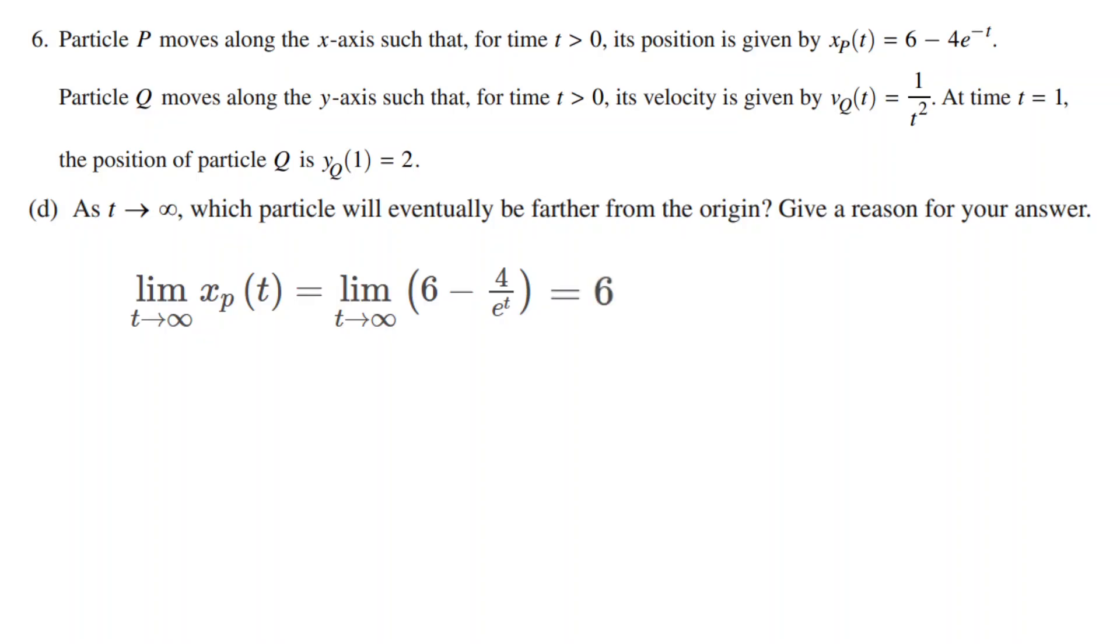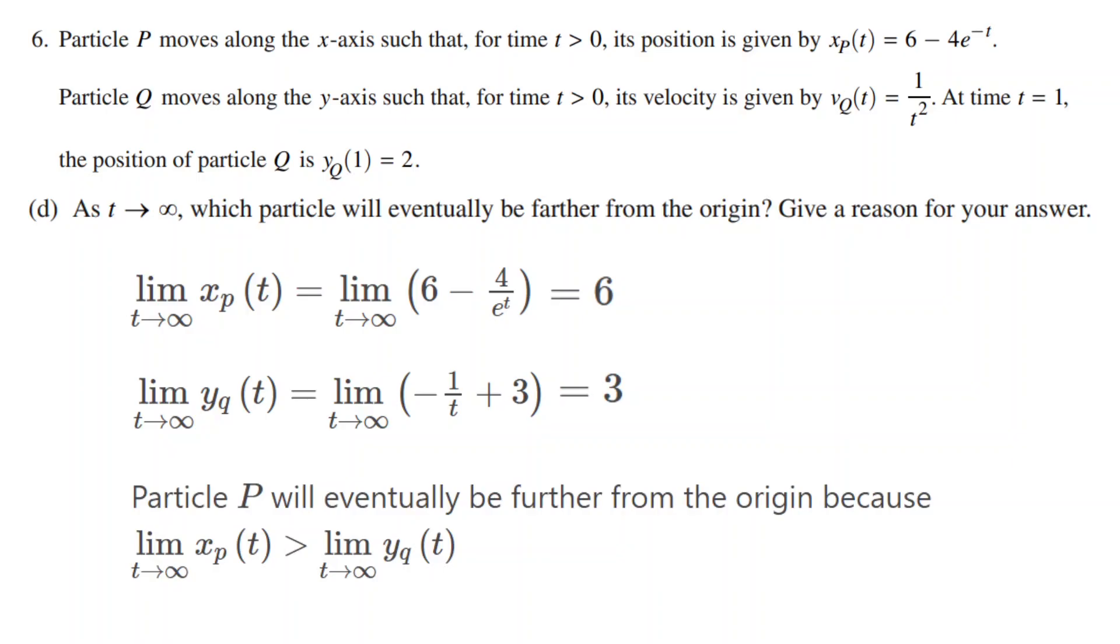For particle Q, we set a limit to infinity of yq of t, which is from Part C. For the same reason as the other limit, the answer would be 3. Particle P will eventually be further from the origin because the limit to infinity of Particle P is greater than the limit to infinity of Particle Q.